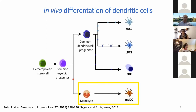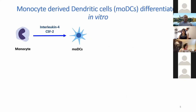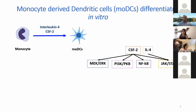Dendritic cells are not usually available in our bloodstream unless something is going on, so we can't use them directly for developing therapies. But we have a lot of monocytes in our bloodstream that can be taken and differentiated to monocyte-derived dendritic cells. Our aim is to understand how this monocyte-to-dendritic cell differentiation happens, how it is regulated and controlled. The main two elements required for this differentiation are CSF2 and IL-4, which activate four signaling cascades: MAPK/ERK, PI3K/AKT, NF-κB, and JAK-STAT4.